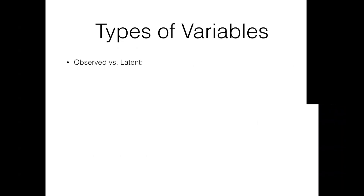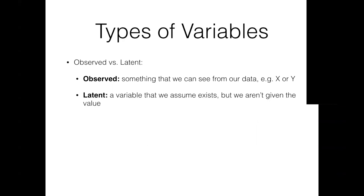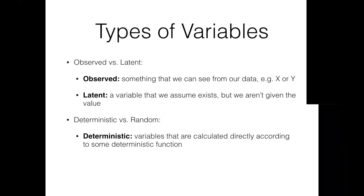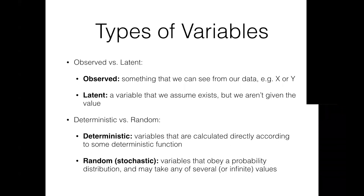Let's first look at several types of variables. First, observed variables versus latent variables. Observed variables are variables that we observe at learning time. Latent variables are variables that we assume exist, but their values are not observed at learning time. We also have deterministic variables versus random variables. Deterministic variables have a fixed value — they can be computed by some deterministic function, such as the output of a convolutional neural network. Random variables follow some probability distribution; they can take different values at different times because they are stochastic.